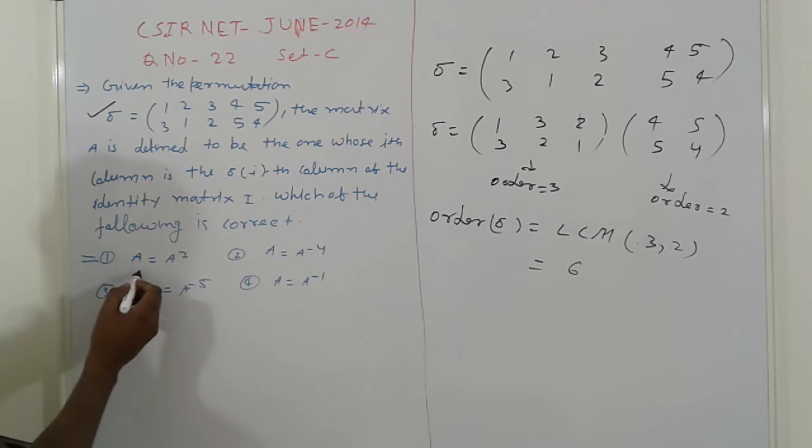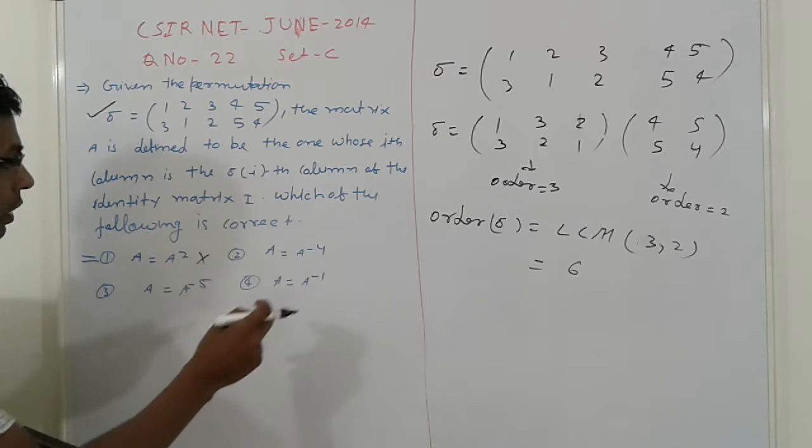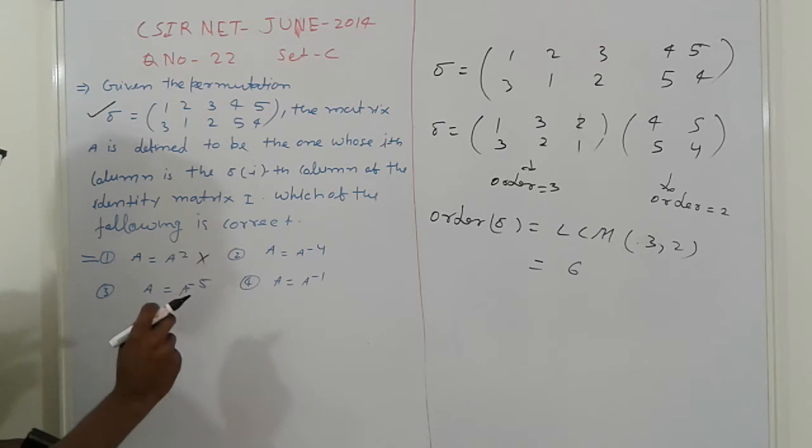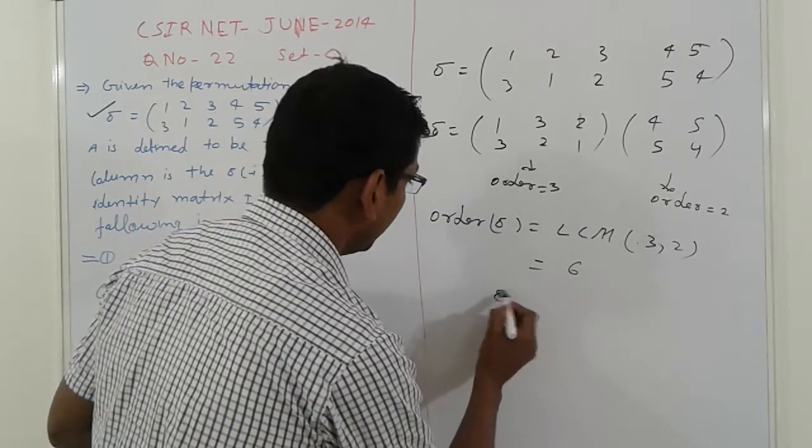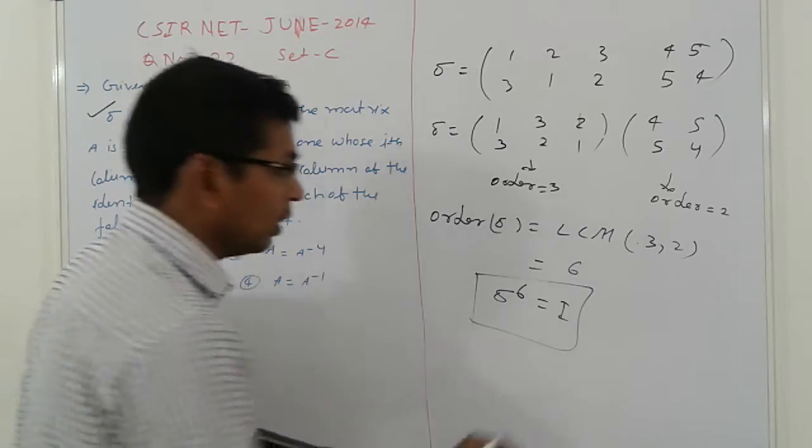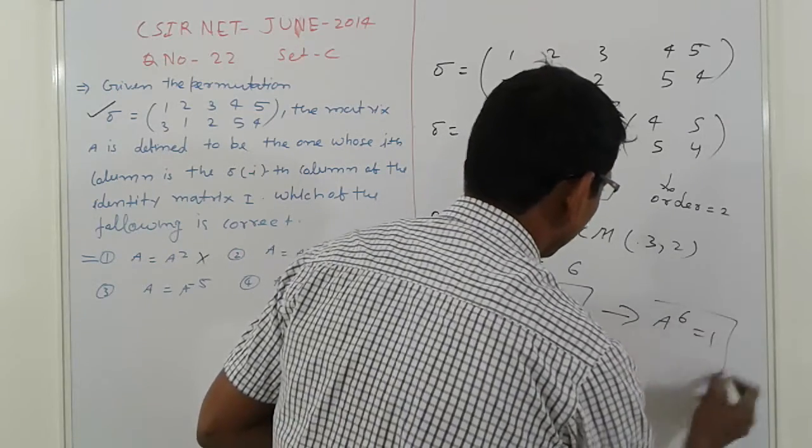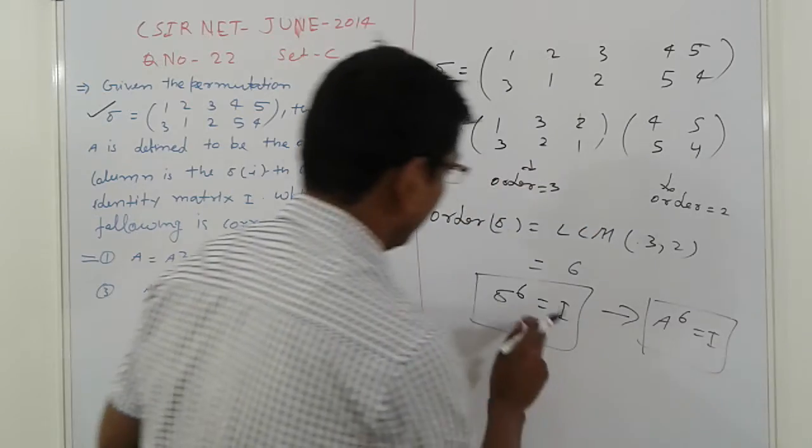Now in the options here. Here a square, which is cancelled. Here either, suppose, a raised to 6. How can a raised to 6 be done? It means sigma raised to 6. That is, otherwise it can be represented as a raised to 6 equals I, identity matrix.